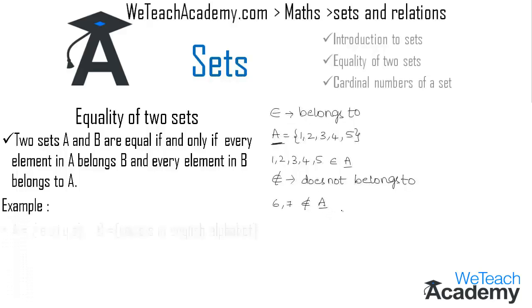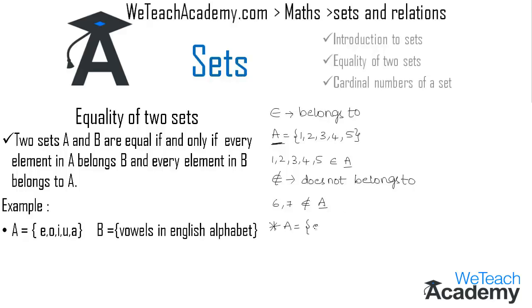For the first example on equality: set A = {e, o, i, u, a} and set B is the set of vowels in the English alphabet. The vowels of the English alphabet are a, e, i, o, u. Every element of A belongs to B and every element of B belongs to A, so we call these two sets equal and write set A = set B.